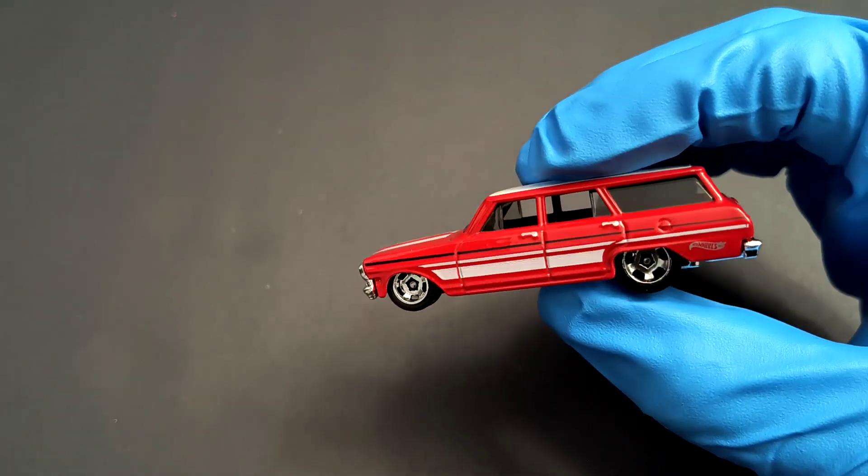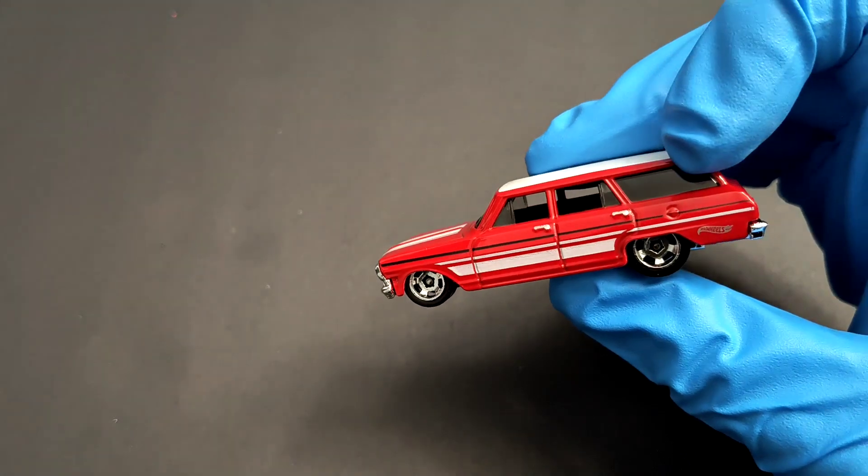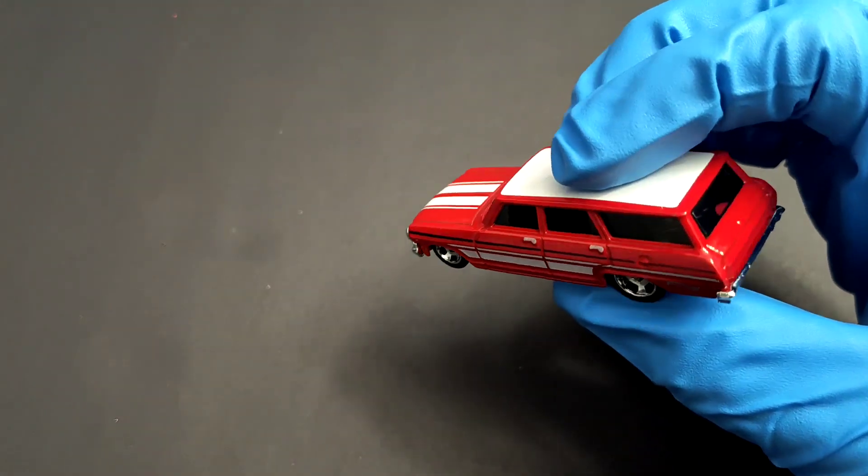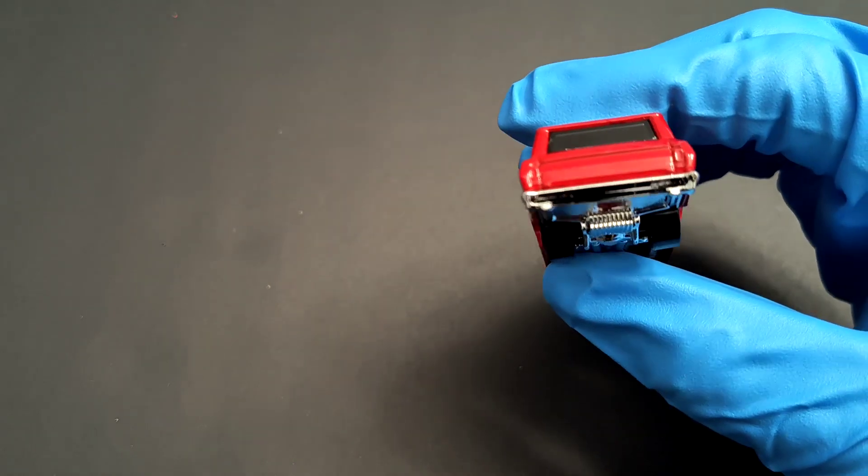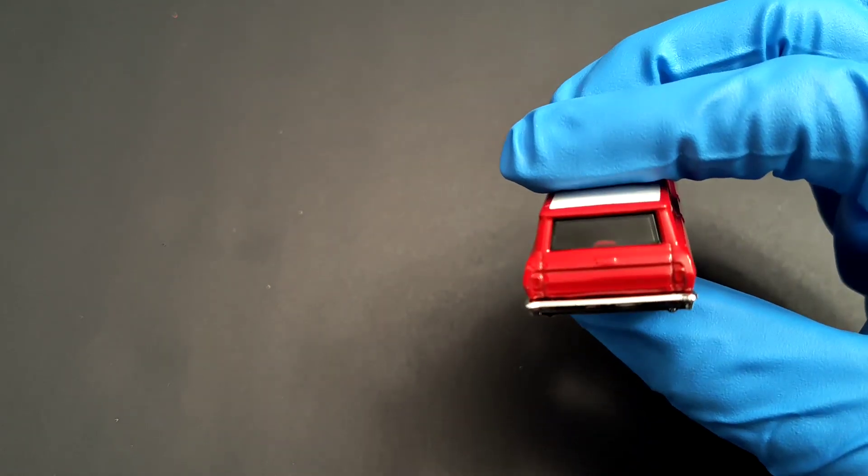This is an older wagon, really long. You see this window, how long it is, going to the back. Again, no major details here. You can see the chrome bumper, you can see the tail lamps but they are not detailed.